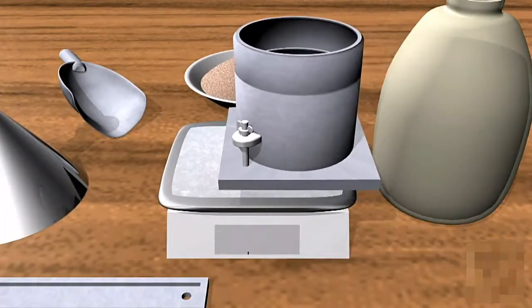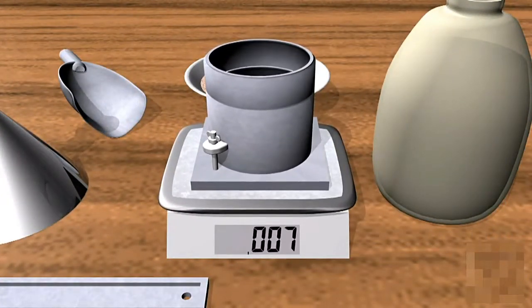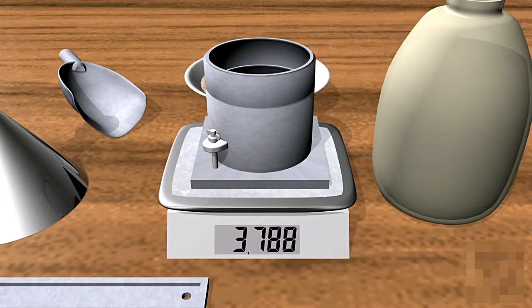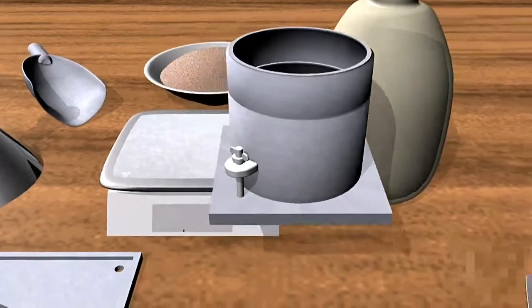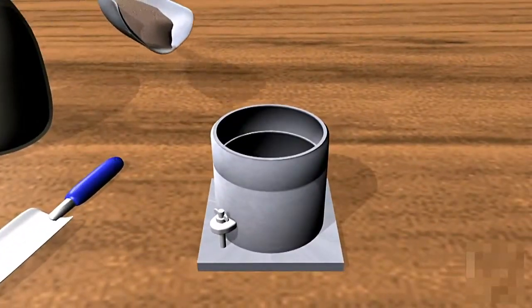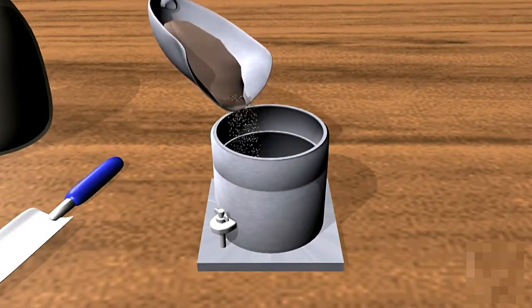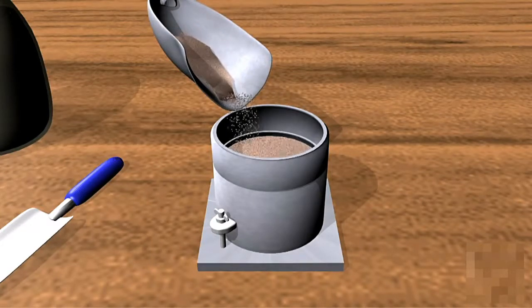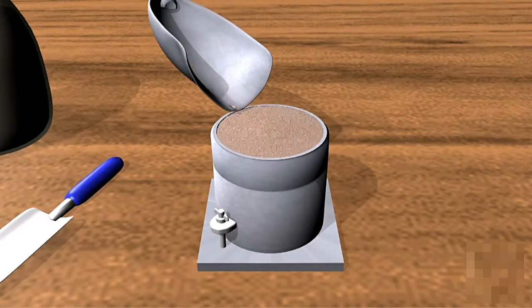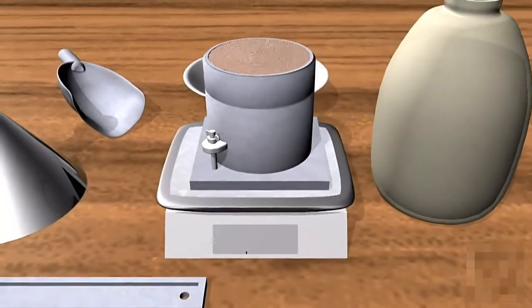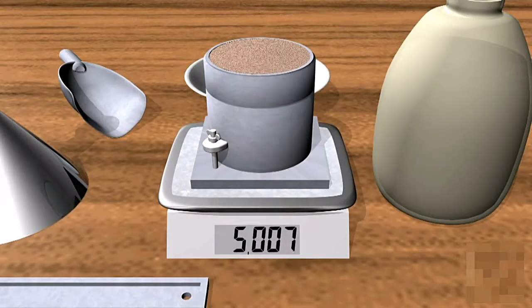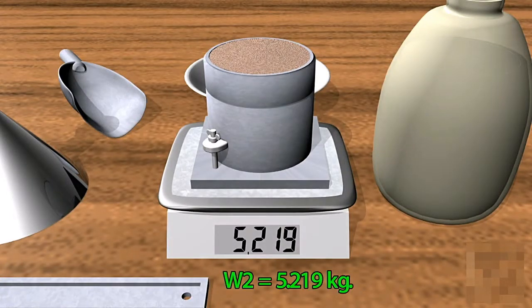For this we need to first find the weight of the empty Proctor mold. We get 3.788 kilograms, we'll refer to this weight as W1. Now we must fill the Proctor mold level to the top with dry sand. Now we weigh the full Proctor mold, we get 5.219 kilograms, we'll refer to this figure as W2.